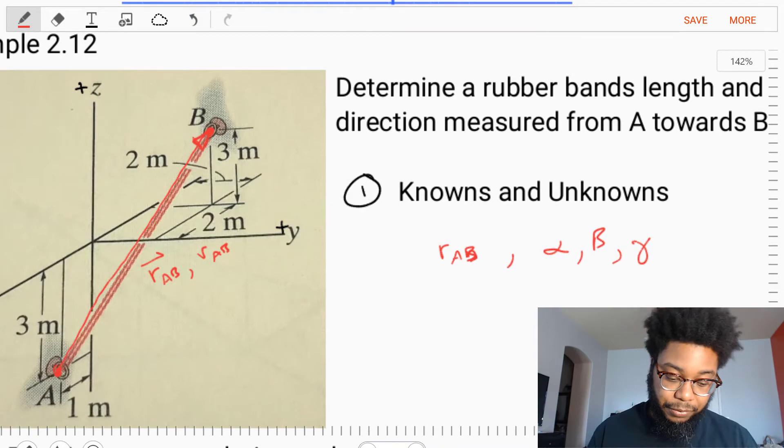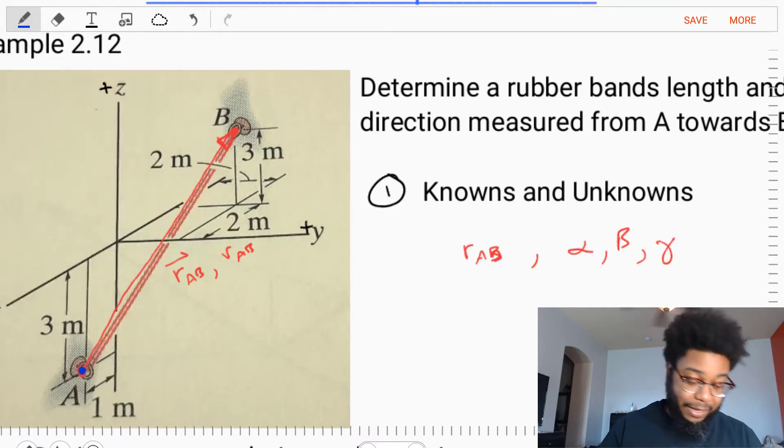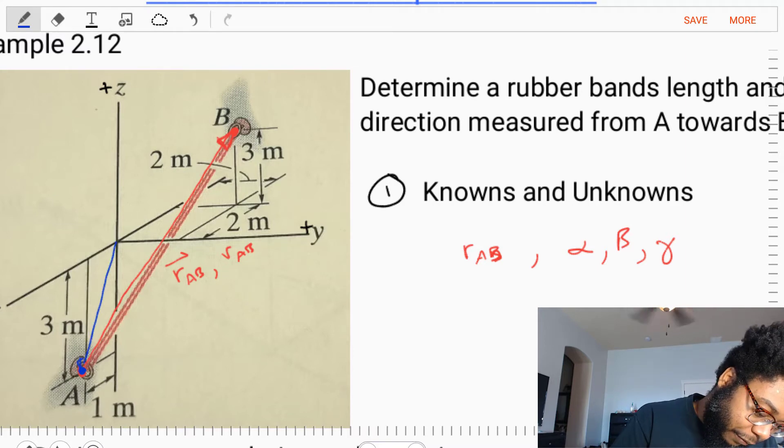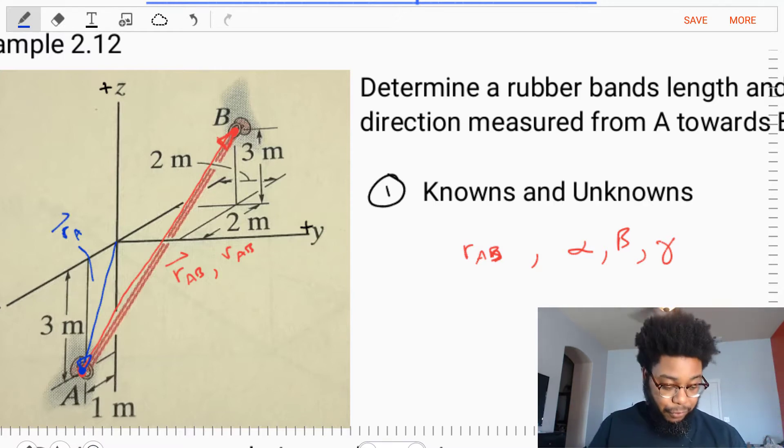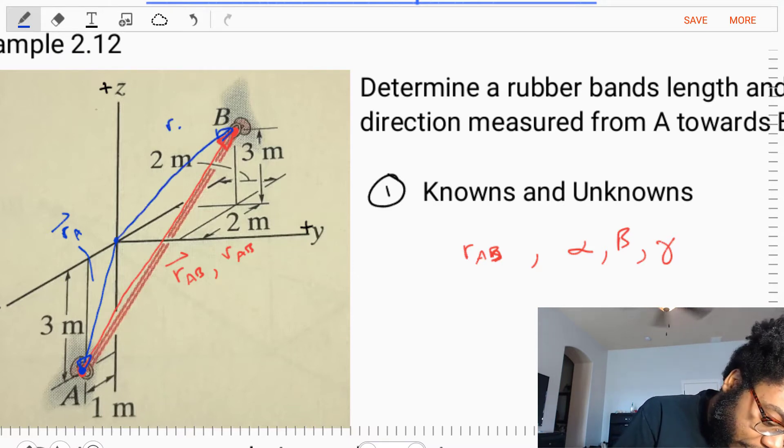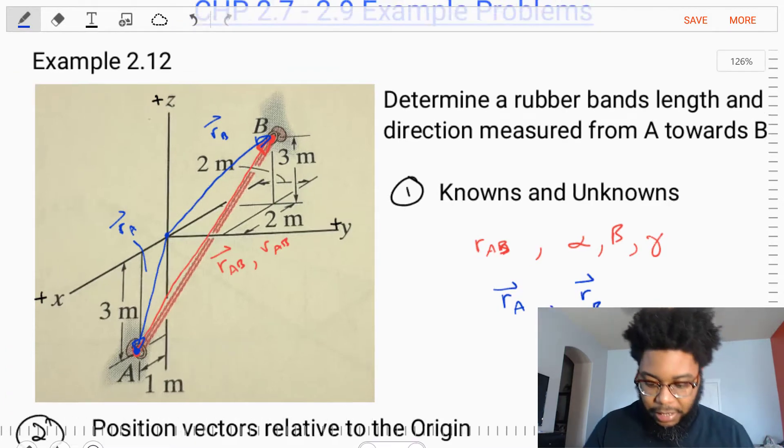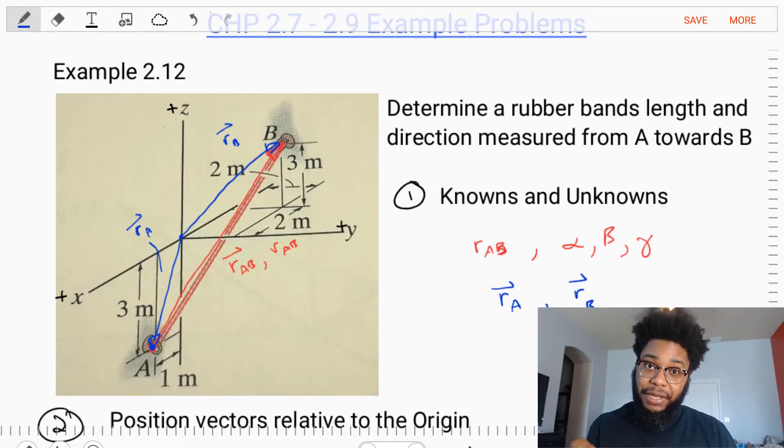What are the knowns? What are the things that we know that will get us to these unknowns? We know the position of A, so we can draw a position vector RA. We also know the position of point B, the RB vector. Our knowns are the RA and RB vectors. From knowing the position of point A and B, we should be able to find the vector that is in between those points.